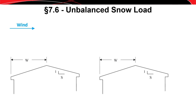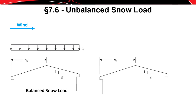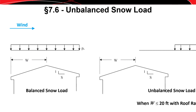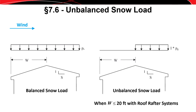Here is the same structure illustrated twice with wind blowing from left to right. For the balanced snow load, we put the sloped roof snow load P_S on the horizontal projection of the roof, applied as a uniform load. For the unbalanced snow load case when W is less than or equal to 20 feet with roof rafter systems, we have the left part of the roof as the windward side and the right part as the leeward side — two terms that will come up again in the discussion of wind.